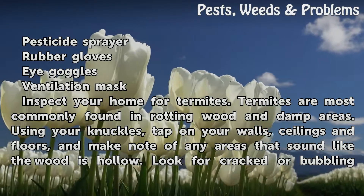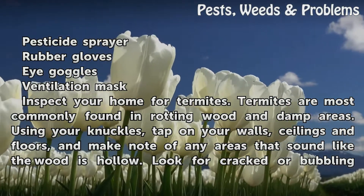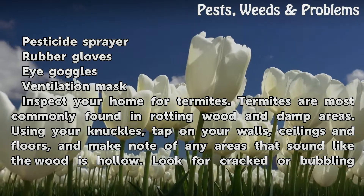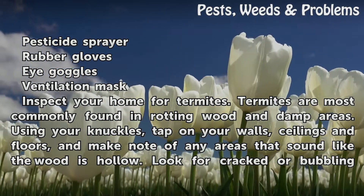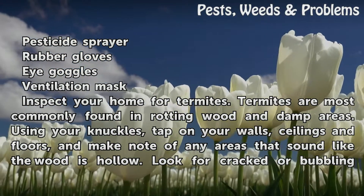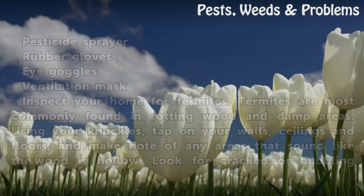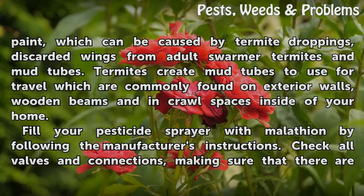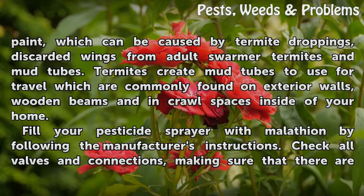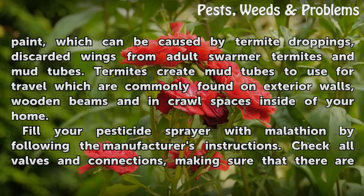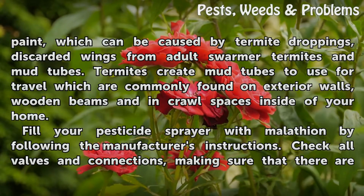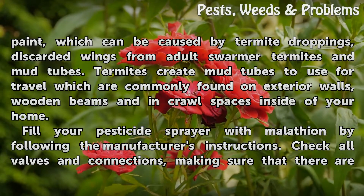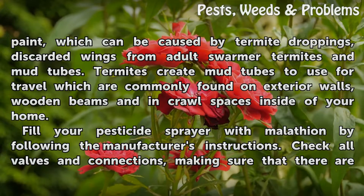Inspect your home for termites. Termites are most commonly found in rotting wood and damp areas. Using your knuckles, tap on your walls, ceilings and floors, and make note of any areas that sound like the wood is hollow. Look for cracked or bubbling paint, which can be caused by termite droppings, discarded wings from adult swarmer termites, and mud tubes. Termites create mud tubes to use for travel, which are commonly found on exterior walls, wooden beams, and in crawl spaces inside of your home.